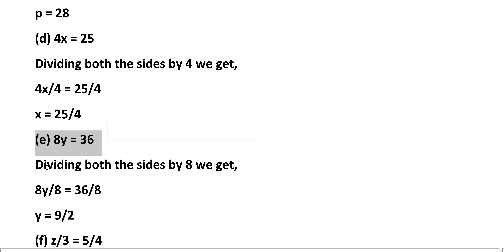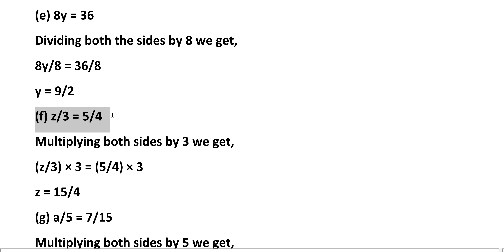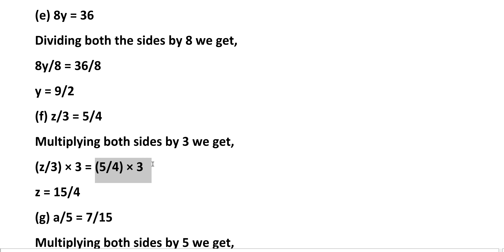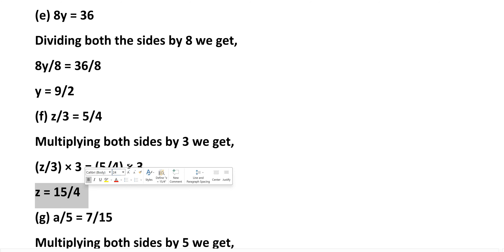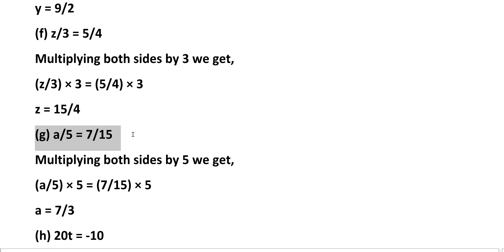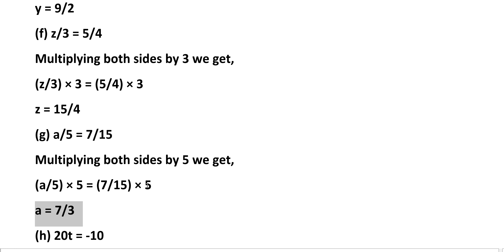E: 8Y equals 36. Divide both sides by 8: 8Y by 8 equals 36 by 8, so Y equals 9 by 2. F: Z by 3 equals 5 by 4. Multiply both sides by 3: Z by 3 into 3 equals 5 by 4 into 3, that is Z equals 15 by 4. G: A by 5 equals 7 by 15. Multiply both sides by 5: A by 5 into 5 equals 7 by 15 into 5, that is A equals 7 by 3. H: 20T equals minus 10. Divide both sides by 20: 20T by 20 equals minus 10 by 20, that is T equals minus 1 by 2.